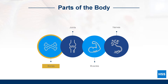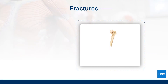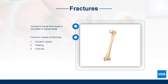Bones are strong, rigid organs that provide support and structure to the body. Fractures are injuries to bones that cause a complete or partial break in the bone. Fractures can occur in a number of different ways. The most common causes include a high force impact such as a fall or hit, a forceful twist of the bone, or an overuse injury which can create small cracks in the bone over time.